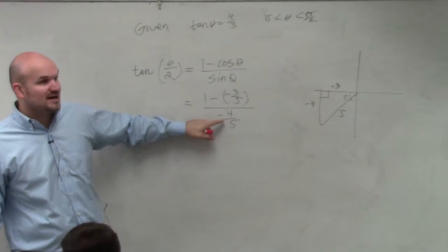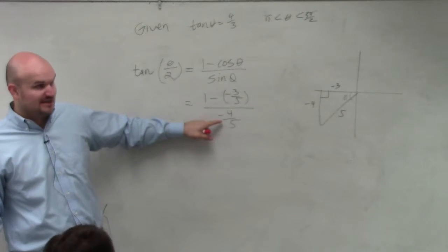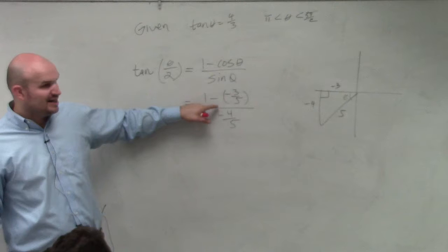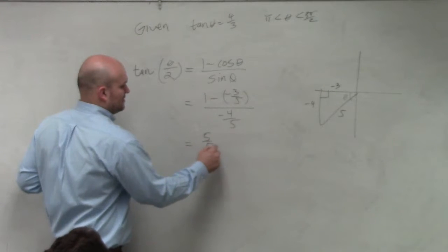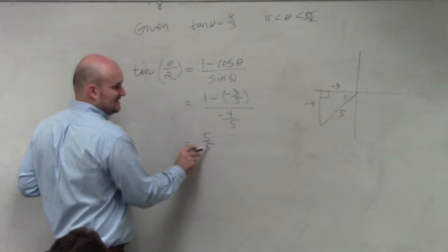I would multiply everything by 5 on the top and bottom. To me, that's the easiest. But if you don't want to do that, and you'd rather rewrite this with fractions, then rewrite 1 with a denominator of 5.